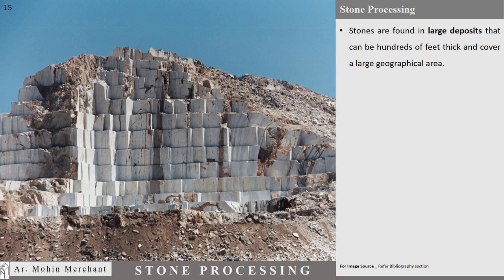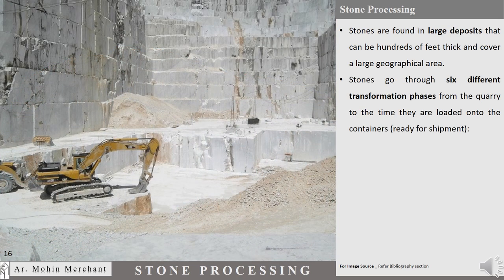Stones are found in large deposits that can be hundreds of feet thick and cover a large geographical area. Stones go through 6 different transformation phases from the quarry to the time they are loaded onto the containers, ready for shipment.